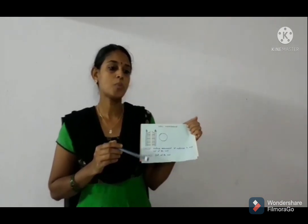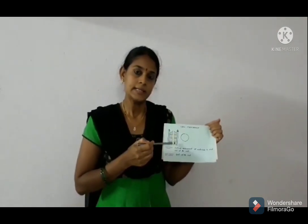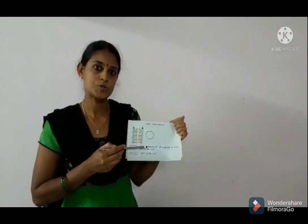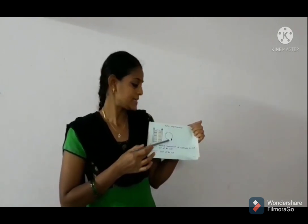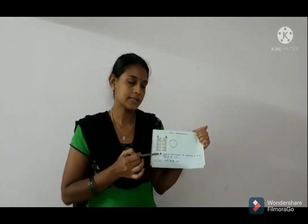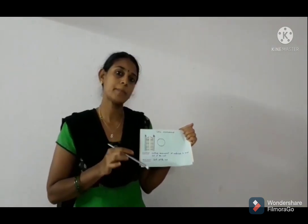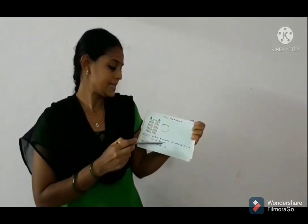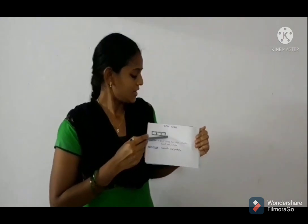Let us discuss one by one part in both cells. The first part is cell membrane. It works as a gate of our house, because it controls which material enters into and out of the cell. This cell membrane is made up of proteins and lipids. It gives support and protects the cell. This is the function of cell membrane.